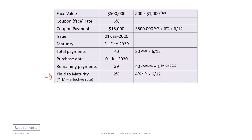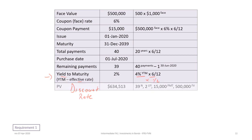Next, we determine the discount rate used to calculate present value. This is the market rate, or yield to maturity, also called the effective rate. The yield to maturity is 4%, and since payments are semi-annual, we divide by two to get 2% per period. Now we have all the inputs: 39 periods, 2% interest rate, $15,000 coupon payment, and $500,000 face value.